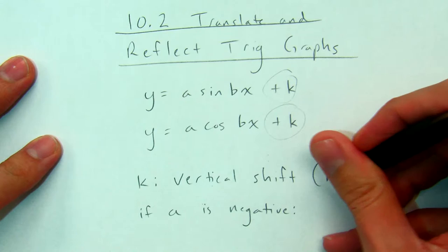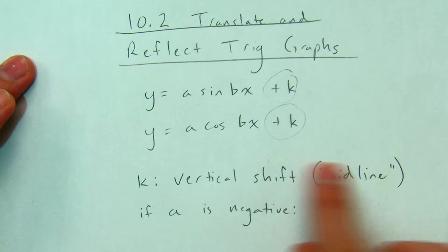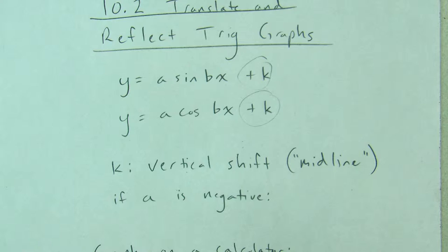And one of the things that it affects that we're going to need to remember is what's called the midline of the graph, which is just a fancy way of saying the line that runs down the middle of cosine and sine. And we'll take a look at that when we do our first example.